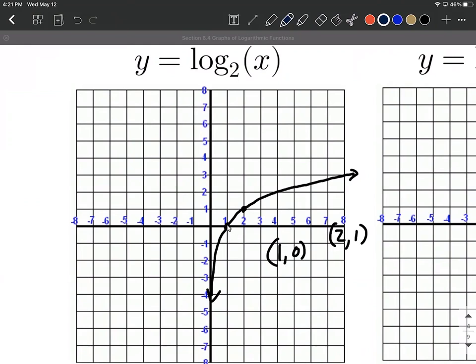Key points 1,0, which is on each one of these parent functions, but then the base comma 1. So the base here has changed to a 2 as opposed to the 3. So that's going to be the ordered pair 2,1.